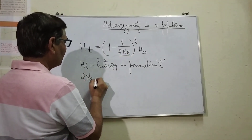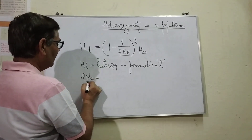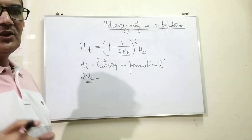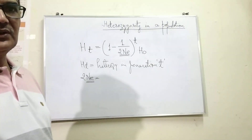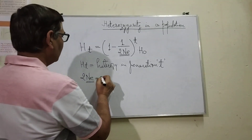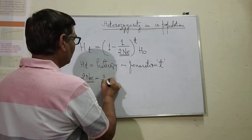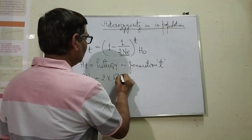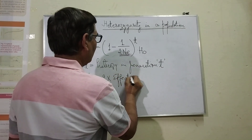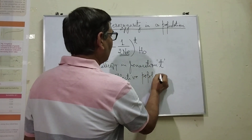Ne is the effective population size. This indicates 2 into the effective population size.